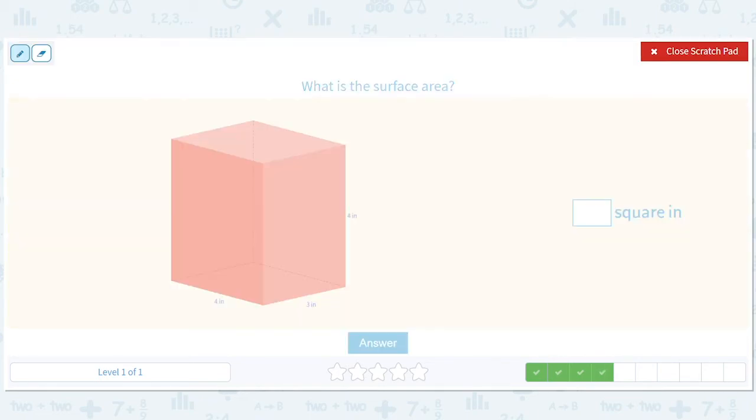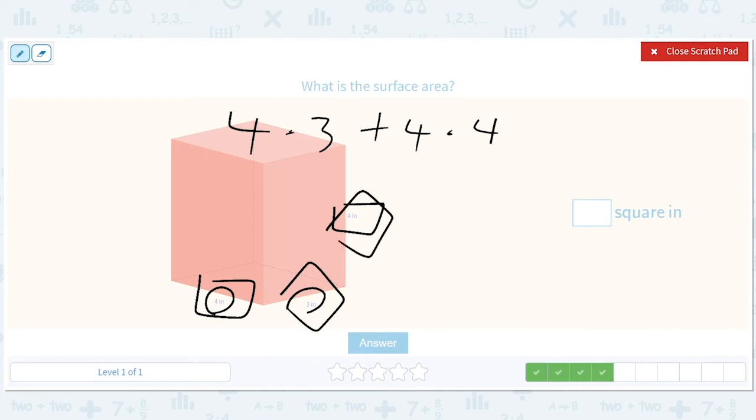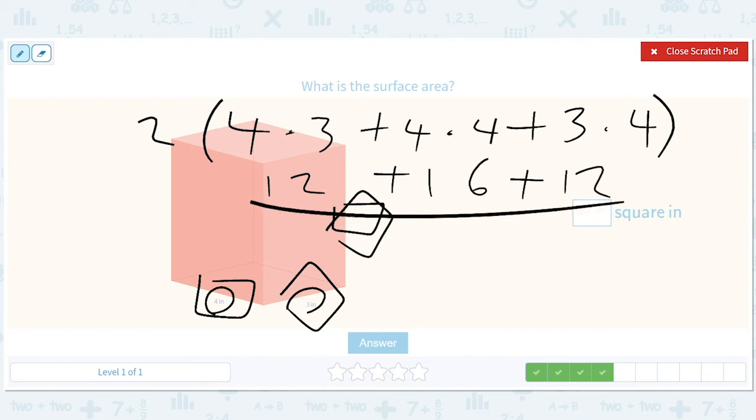How about this? 4 times 3, so I'm doing this times this, 4 times 4 plus 4 times 4 plus 4 times 4, and then I'm doing this times this, just every single combo, plus 3 times 4. And I'm multiplying that by 2. So that gives me 12 plus 16 plus 12. So 12 plus 16 is 28 plus 12 is 40. So 2 times 40 is 80.